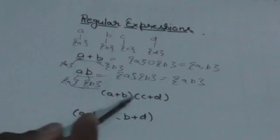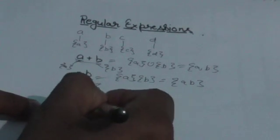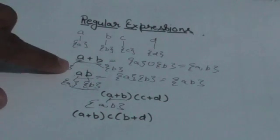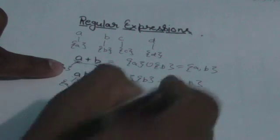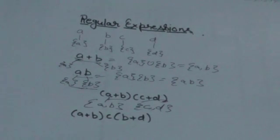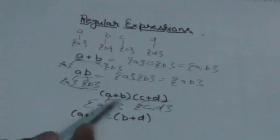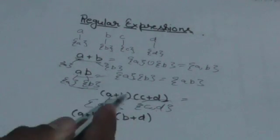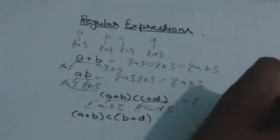Now look at the regular expression (a+b)(c+d). The regular set corresponding to a+b has two elements: a and b. The regular set corresponding to c+d also has two elements: c and d. This regular expression represents the concatenation of these two sets.